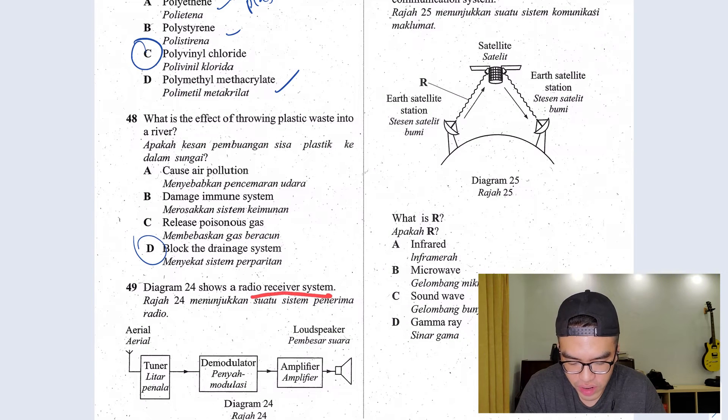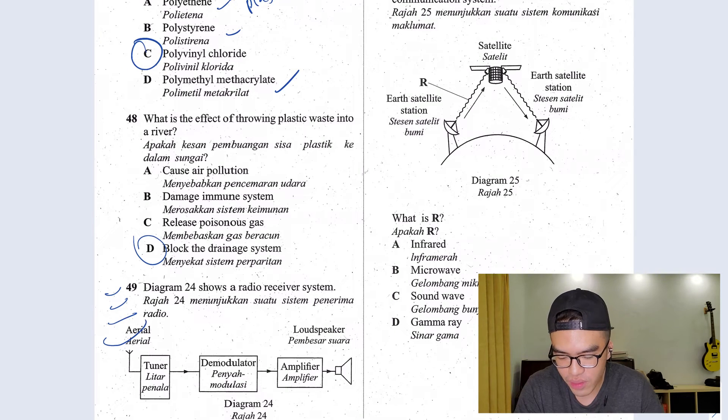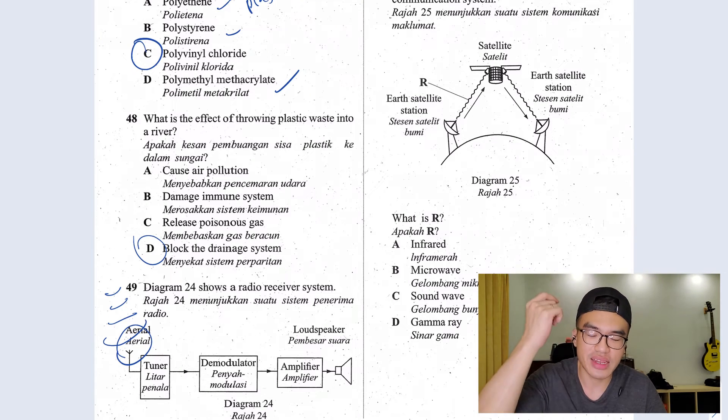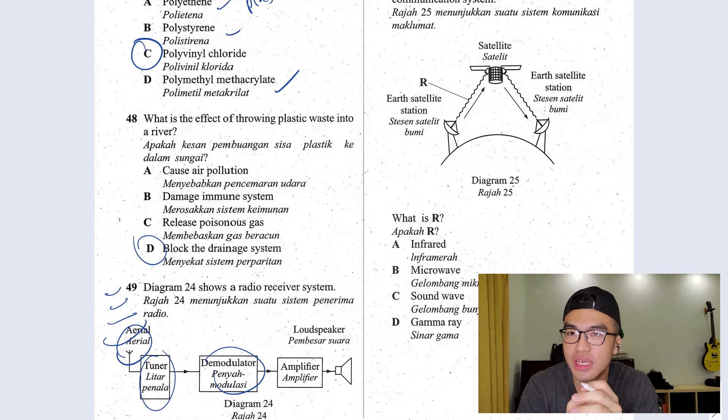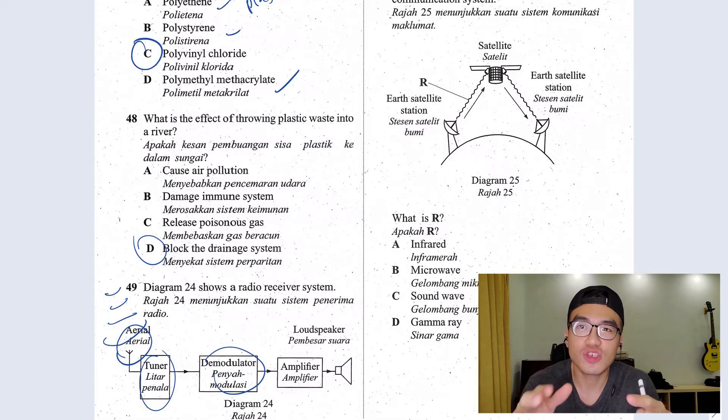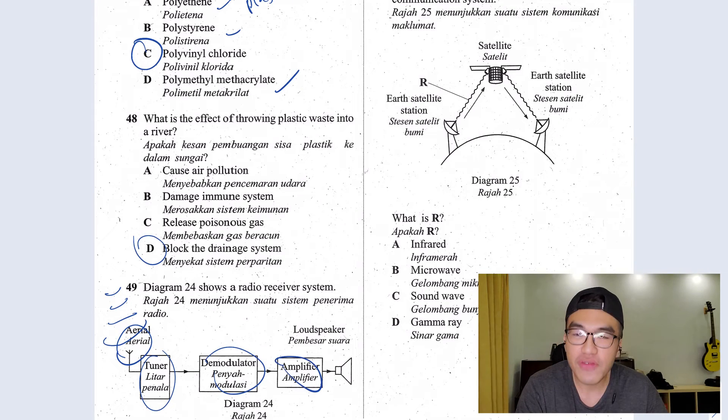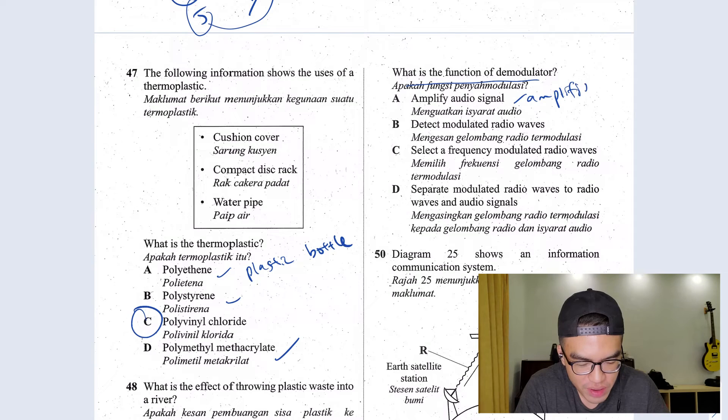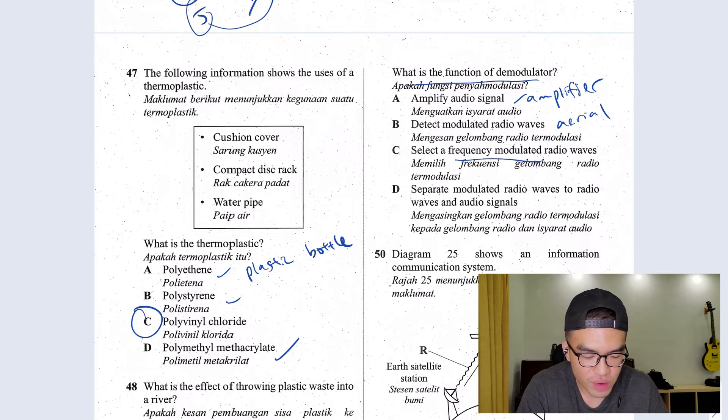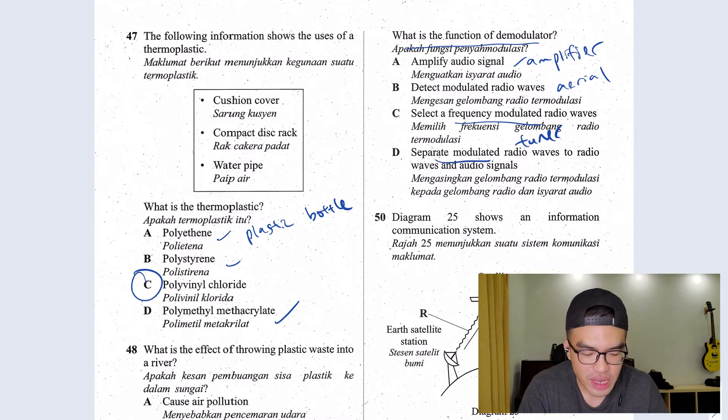Question 49. This is a radio receiver system. You have this in your phone. You receive, let's say your friend is calling you. You have your signal coming from the tower. Your aerial, which is the antenna you receive. You have your tuner here and then you have your demodulator here. What is the function of the demodulator? This is to separate the sound signal out so that you can listen to what your friend is trying to say. Amplifier, of course, is to amplify the sound. Of course, you have a loudspeaker which gives you the sound. So what is the question? What is the function of the demodulator? This is the amplifier. Detect modulated radio wave that will be your aerial. Select a frequency modulated radio waves. That would be your tuner. Separate modulated radio waves and audio signal. This would be the answer.